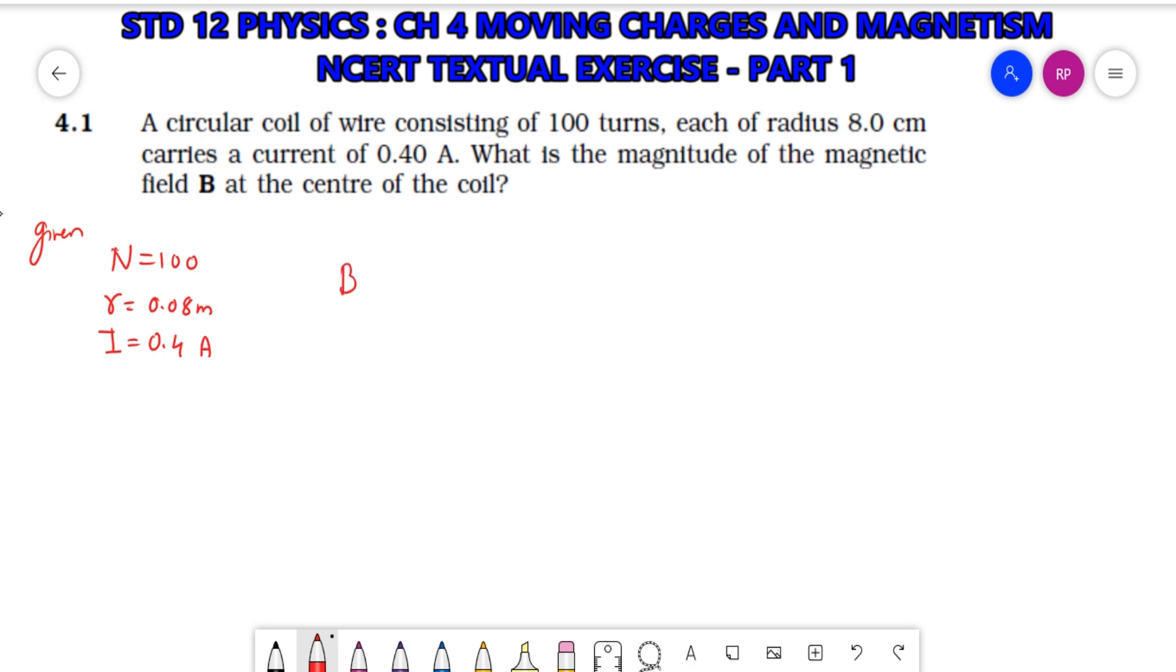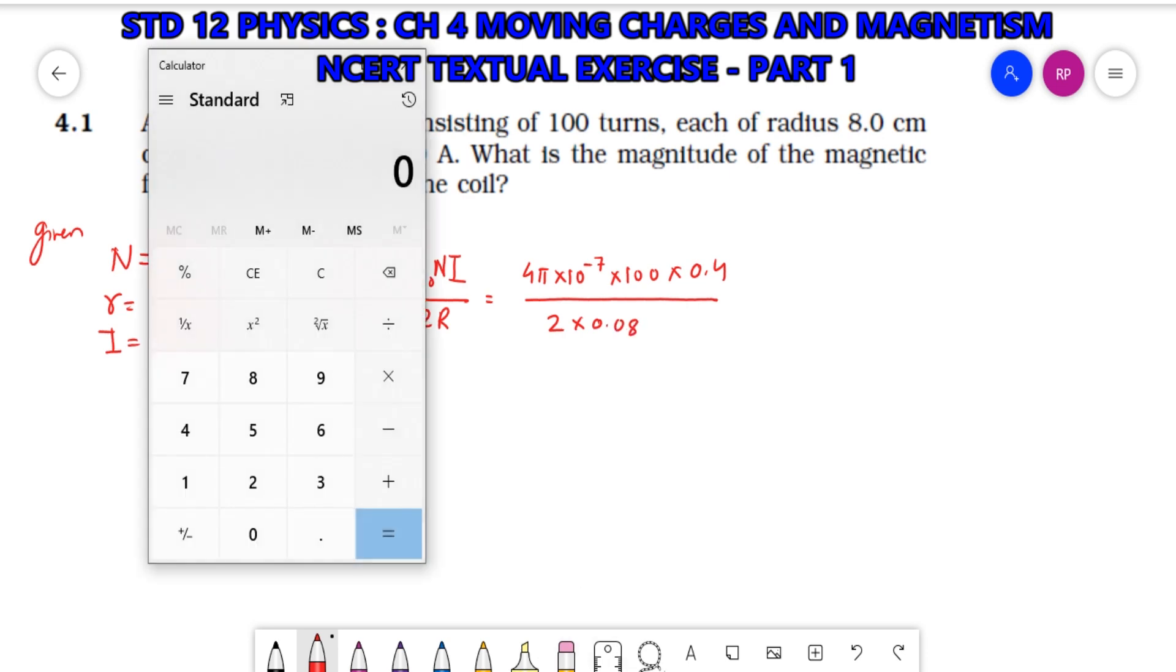The magnetic field due to a circular loop formula is μ₀I/2R. For one loop with current 2R, but here we have 100 loops, so the formula is μ₀NI/2R. We have μ₀ equals 4π into 10 to the minus 7, N equals 100, current 0.4, upon 2, radius value 0.08.